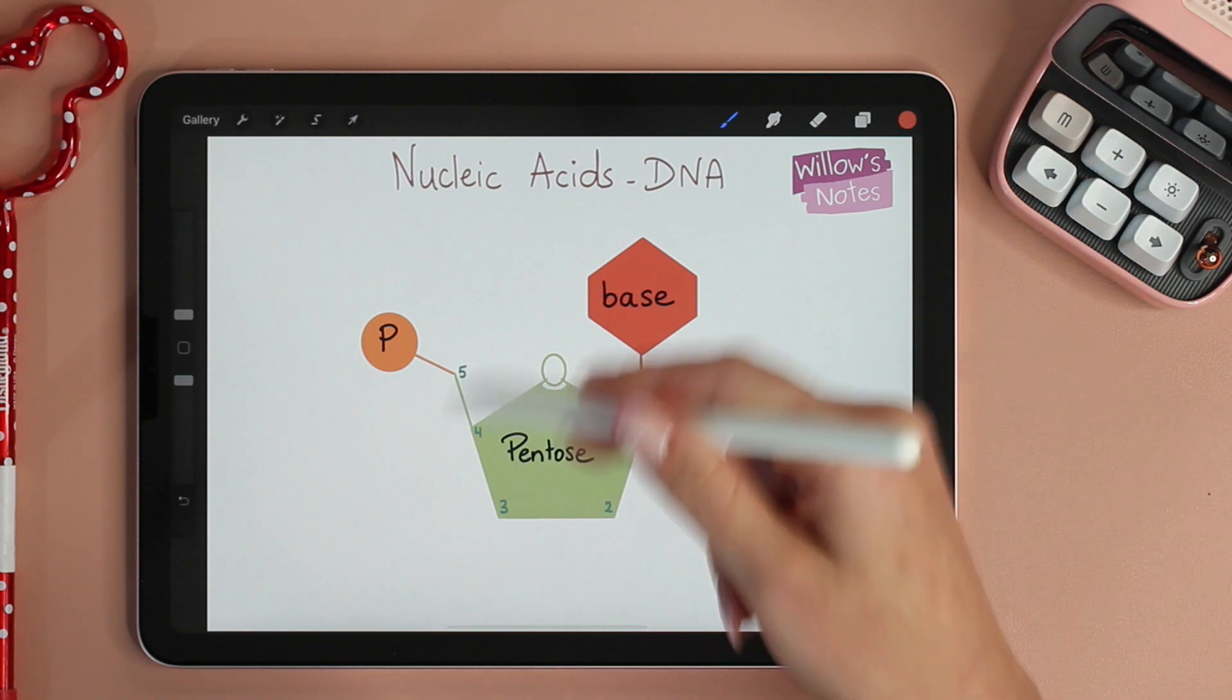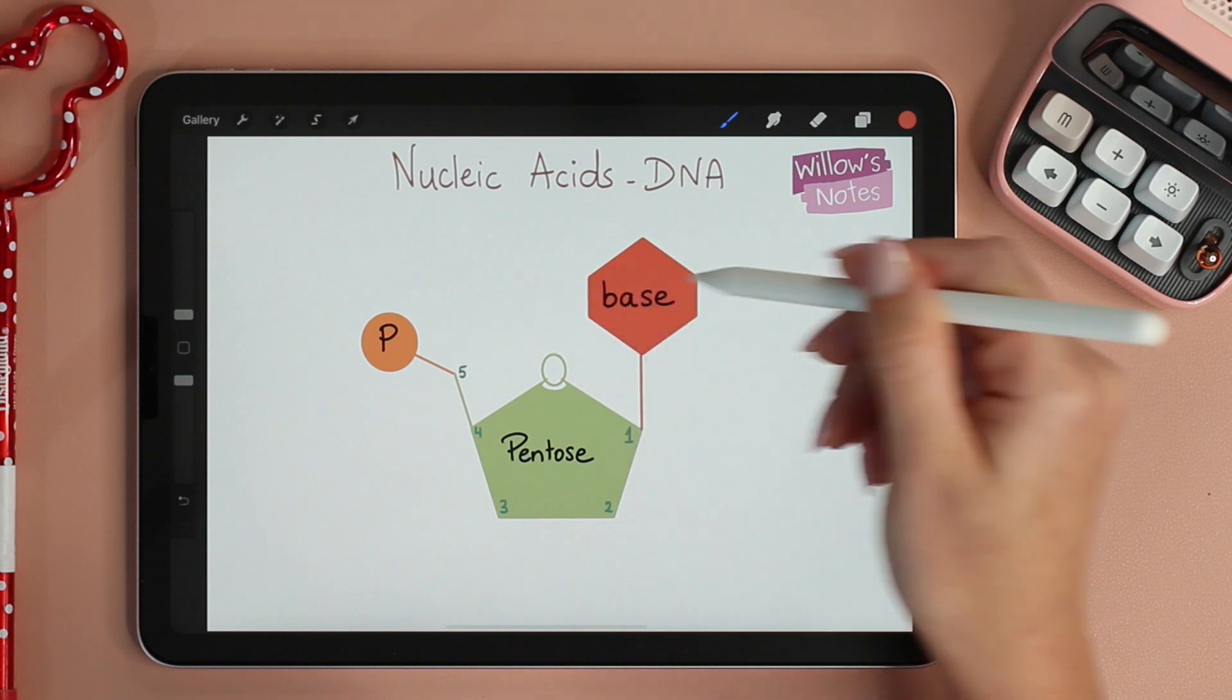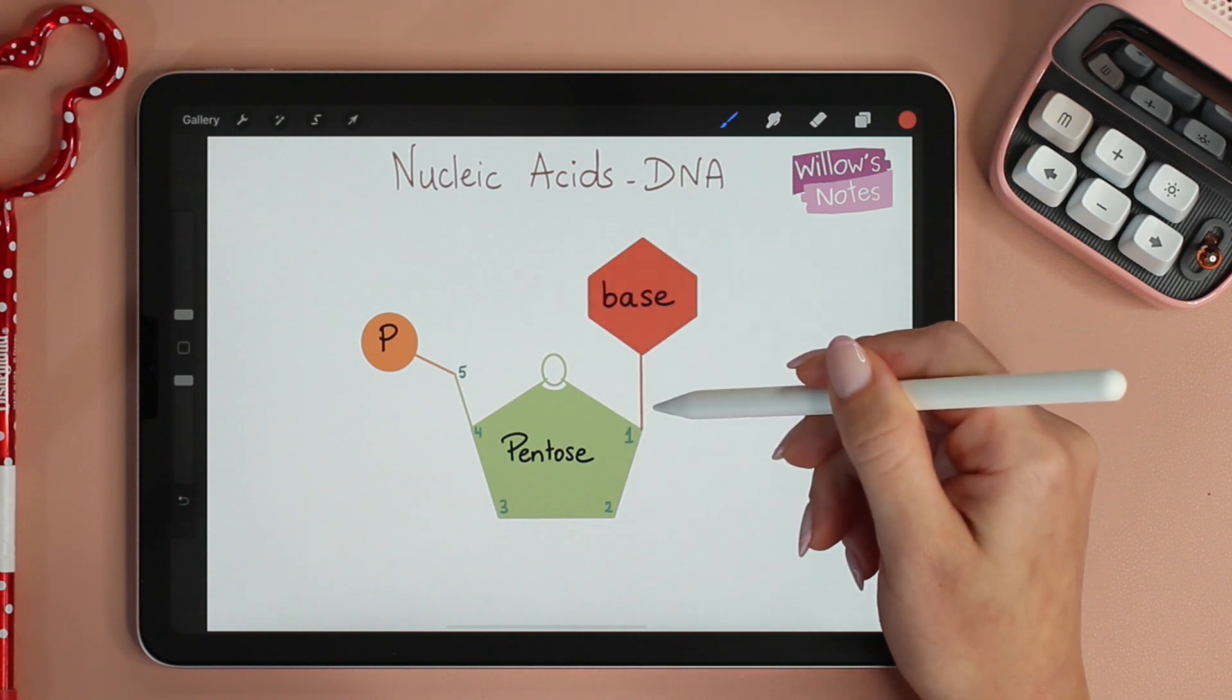And here is how a nucleotide looks like, with the phosphate bound to carbon number 5 and the base to carbon number 1.